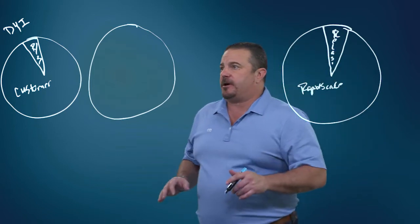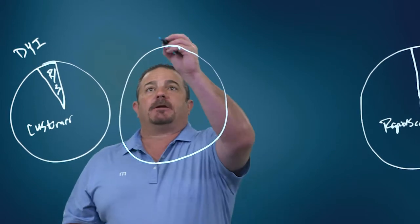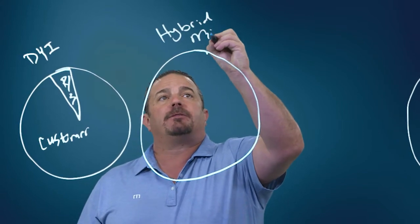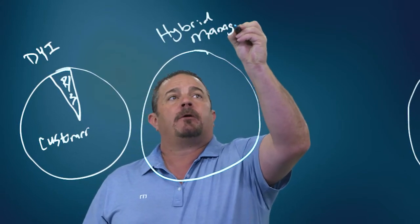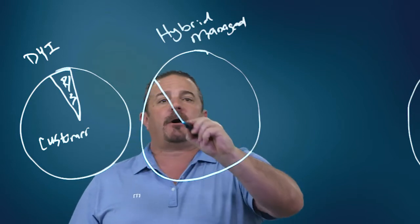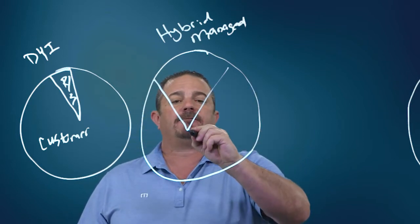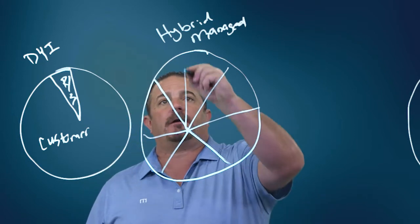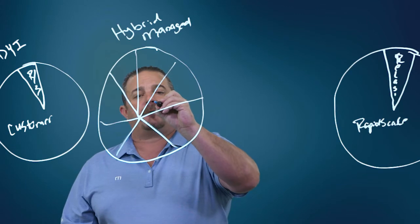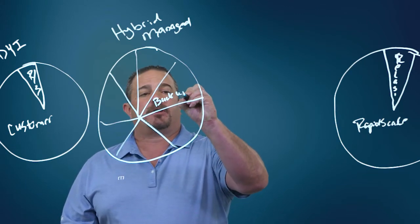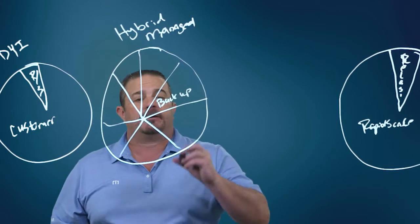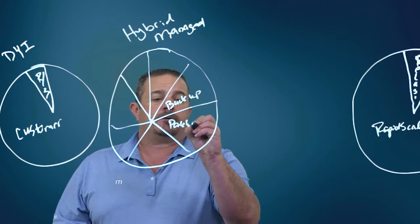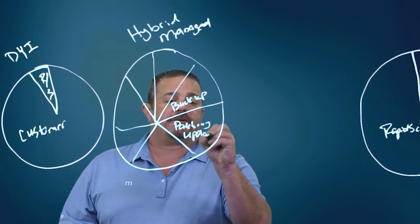The hybrid managed or co-managed is where the majority of our customers live and breathe. What you can think about here is RapidScale and the customer have taken this pie and divided it up into a bunch of different slots. Here would be backups—this is a backup slice of the pie. The customer may say, 'RapidScale, I want you to handle that.' This is patching and updating, and the customer may say, 'RapidScale, I want you to handle that.'